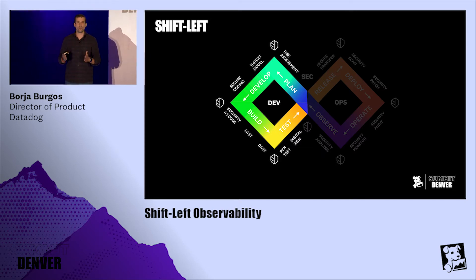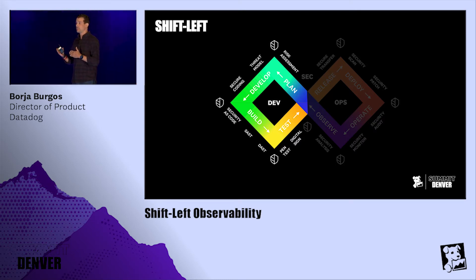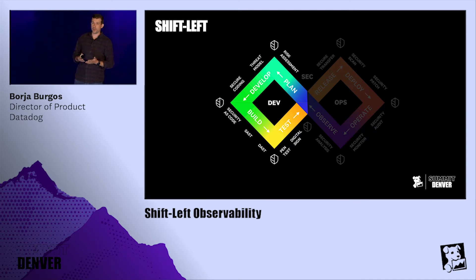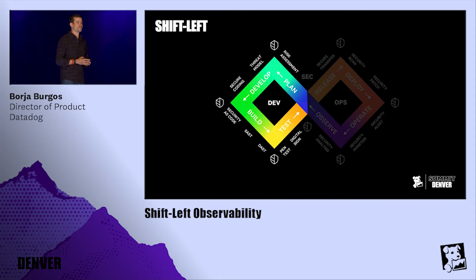What shift left aims to do is move as much of this monitoring as possible further left into the development workflows — enabling developers to own more of these responsibilities so we can capture regressions and bugs earlier, which means it's going to be a lot cheaper. Who would rather catch a bug in development as opposed to in production when hundreds of thousands of customers are being affected?